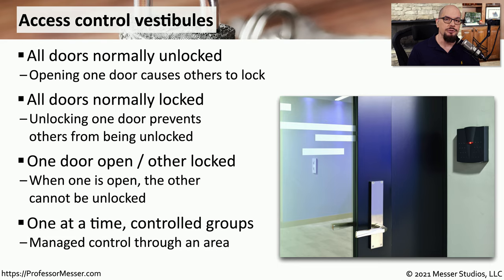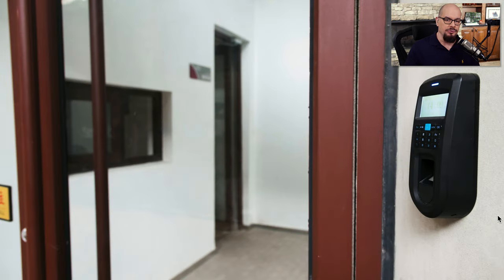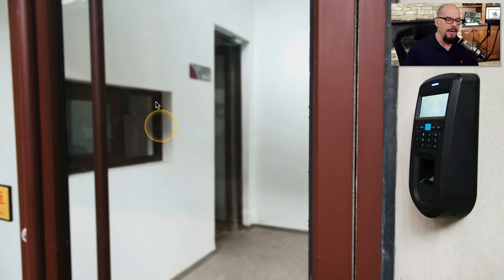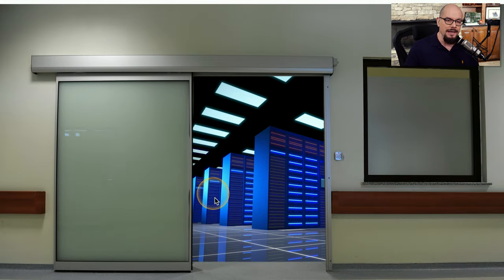This allows the person who's managing access to the data center to control exactly who may be allowed access through the vestibule and to limit how many people can pass through at any particular time. Here is the view from outside of an access control vestibule. It looks like you need to first authenticate to gain access through the locked door. Once inside, you may have to provide some type of identification to whoever may be sitting here for security, and that security would then open the second door and allow you access to the data center.